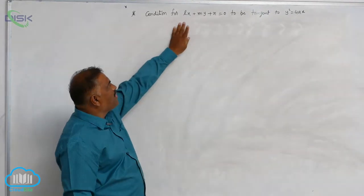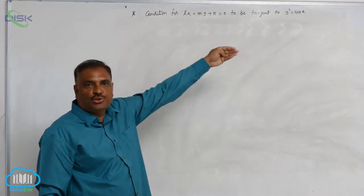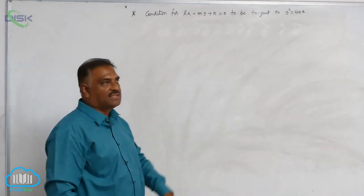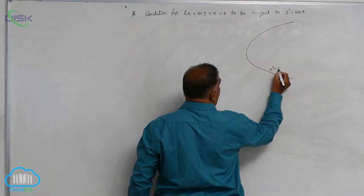We will discuss the condition for Lx plus My plus N equal to 0 to be a tangent to y square equal to 4Ax. Let us consider the parabola y square equal to 4Ax.